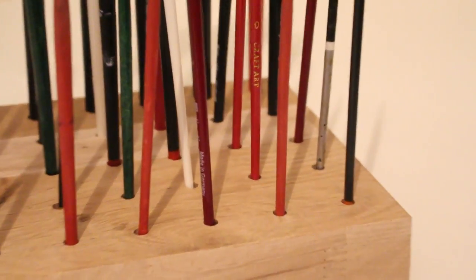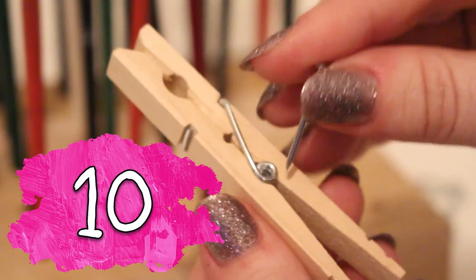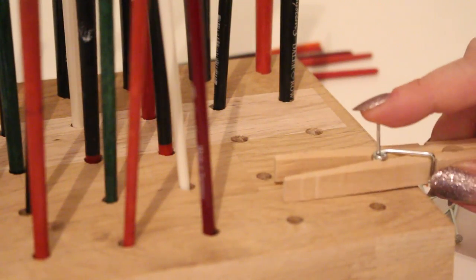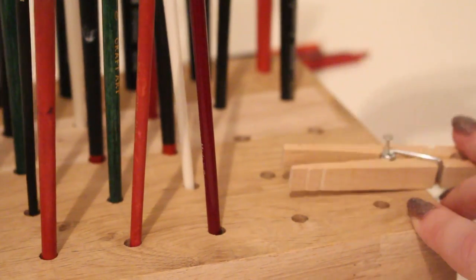So for number 10, I'm going to attach it to this wood block but you could put it on something else if you wanted. So I'm going to take a peg and a nail, pushing the nail through the loop in the middle, and then I'm just going to nail it to the side of the block.